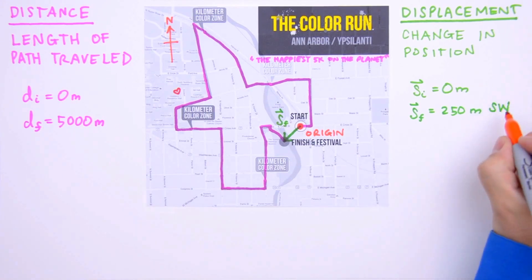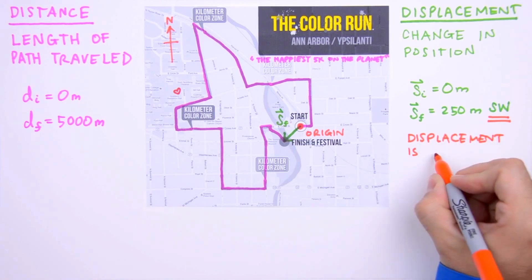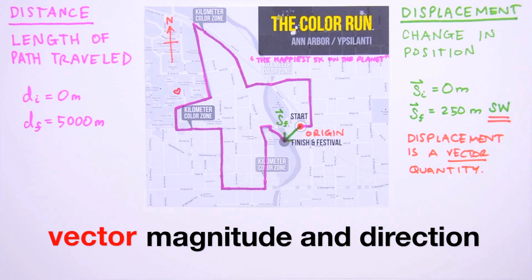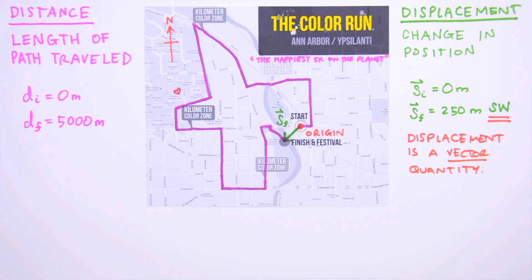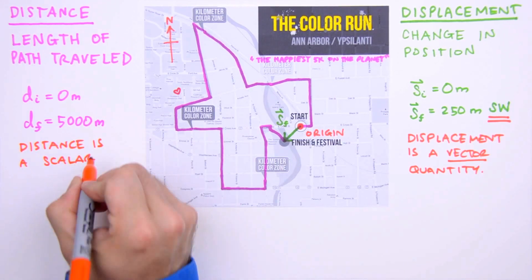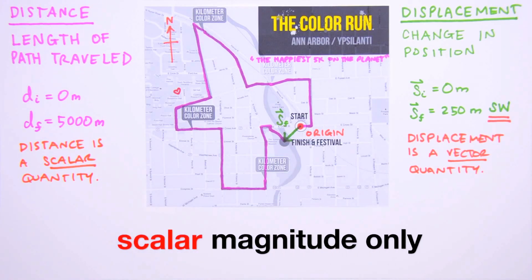The direction — southwest — is a critical difference between distance and displacement. Displacement is what we call a vector quantity: a quantity endowed with both magnitude (in this case 250 meters) and direction (in this case southwest of the origin). We indicate a vector graphically by drawing an arrow, and mathematically by placing a tiny arrow above the variable. Distance, on the other hand, is not a vector quantity because it lacks directional information. Distance is a scalar quantity — a quantity describing magnitude only.